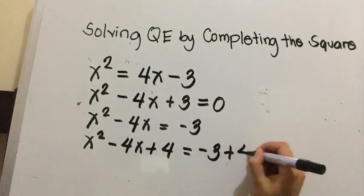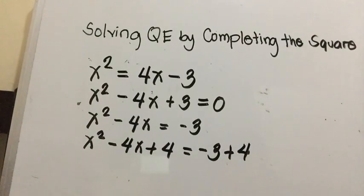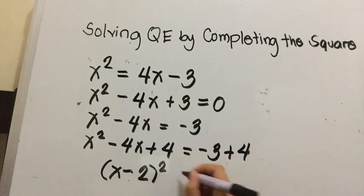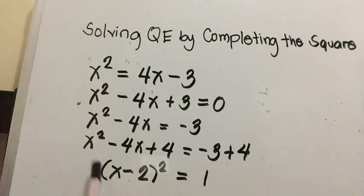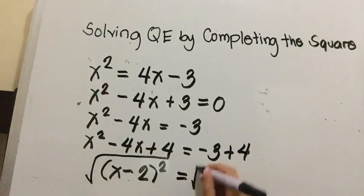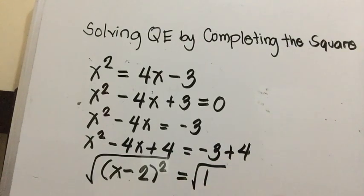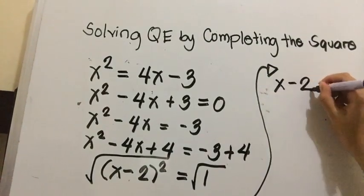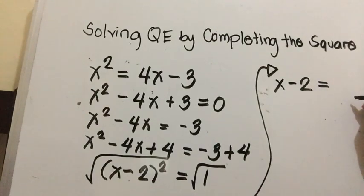So negative 3 plus 4. After that, we're going to get the square root of the binomial. So x minus 2 squared equals negative 3 plus 4 is 1. How did we get this? The square root of x squared is x, the square root of 4 is 2, and the sign of the middle term is negative. Then we get the square root of both sides. The square root of x minus 2 squared gives x minus 2 equals positive and negative 1.